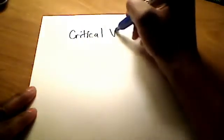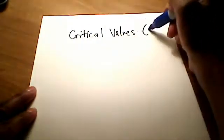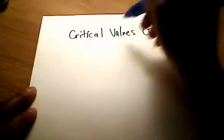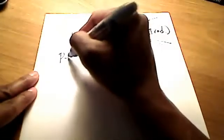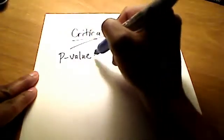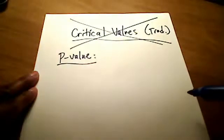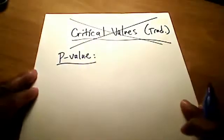So what the p-value method does separately from the traditional method is this: the traditional method uses something called critical values. The p-value method does not use that at all. The p-value method says, 'I don't really care about the critical value whatsoever.' So that's kind of a nice thing.